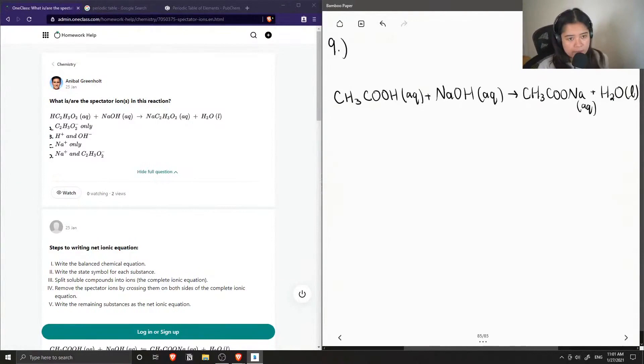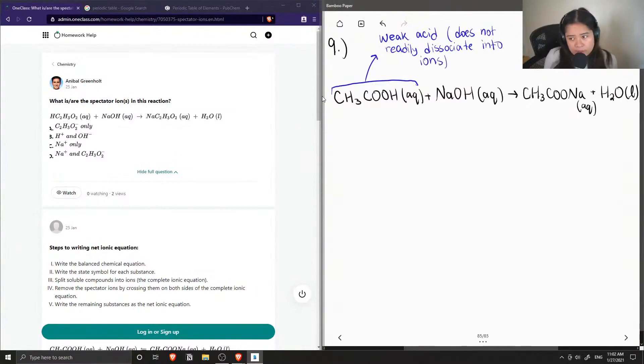Okay, so this is our molecular formula, and typically our next step would be to separate these substances into their ions if they were all aqueous and not in the solid or liquid phase. But if we look at our acetic acid, this is a weak acid. So this means it does not readily dissociate into its ions. And it only partially dissociates.